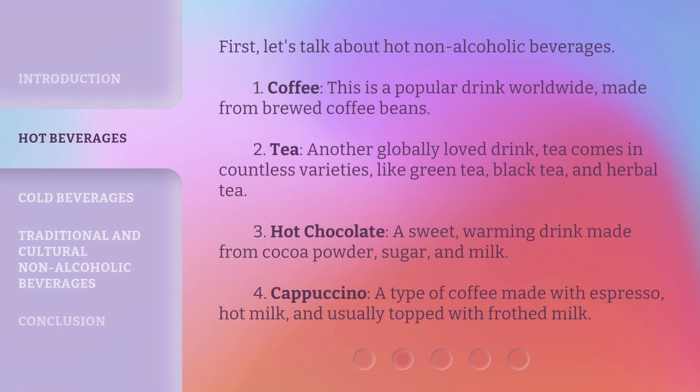First, let's talk about hot non-alcoholic beverages. 1. Coffee — a popular drink worldwide, made from brewed coffee beans. 2. Tea — another globally loved drink. Tea comes in countless varieties, like green tea, black tea, and herbal tea. 3. Hot chocolate — a sweet, warming drink made from cocoa powder, sugar, and milk. 4. Cappuccino — a type of coffee made with espresso, hot milk, and usually topped with frothed milk.